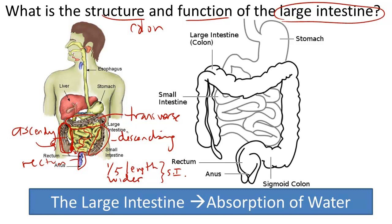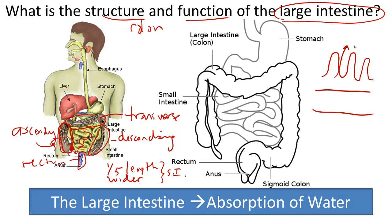The interior of the large intestine is also different from the small intestine, because it does not contain villi. The villi were those long projections that help the small intestine absorb nutrients into the bloodstream. So, it does not contain villi inside. That's going to help with the function. There is a lumen, or space, inside the interior of the large intestine.